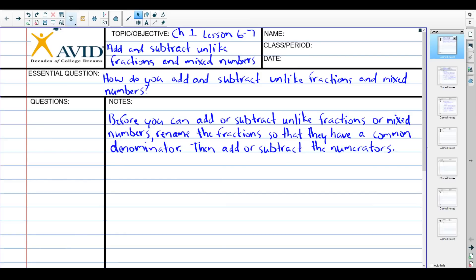I guess I can narrate while you write down. So our central question: how do you add and subtract unlike fractions and mixed numbers? That's our big goal. The big part of the notes is just a reminder of how this works, which is that you cannot add or subtract unlike fractions without a common denominator. So the first thing you do is rename it so that they have a common denominator, and then you add or subtract like we did earlier.